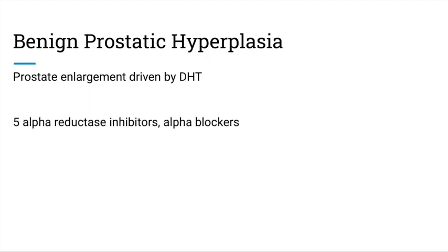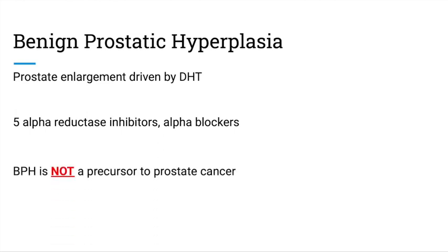Alpha blockers such as tamsulosin can relax the smooth muscle in the bladder neck and prostate gland, controlling the symptoms of BPH. It is very important to note that BPH is not a precursor to prostate cancer.